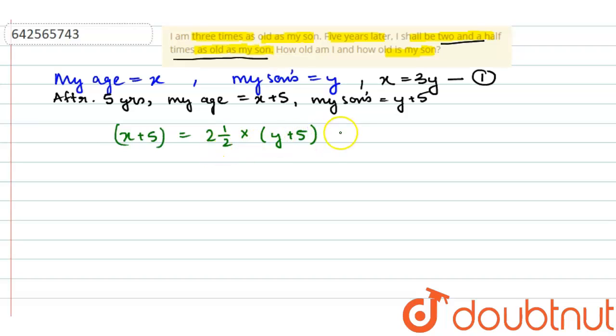Now two and a half can also be written as 5 by 2. So we get x plus 5 is equal to 5 by 2 into y plus 5, and this implies 2x plus 10 is equal to 5y plus 25. Now this implies 2x minus 5y is equal to 15.